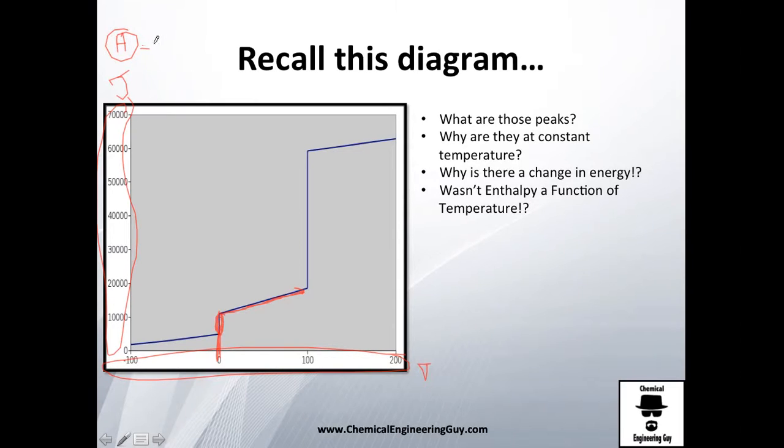Enthalpy, remember, is essentially internal energy plus PV product. And now you see this huge change here. Actually you go from 20,000 to 60,000, and actually no change of temperature.